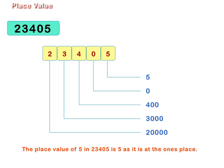Let us find out the place value of each digit in 23,405. The place value of 5 in 23,405 is 5 as it is at the ones place.